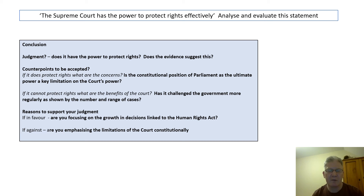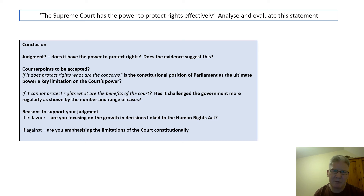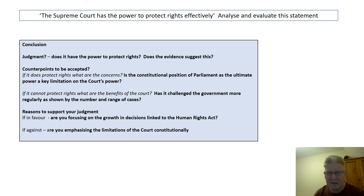In conclusion, your conclusion should have three parts. Start with a clear judgment: in the light of the evidence, does the Supreme Court have the power to protect rights? You've got to make your decision one way or the other. If you argue that it does, you want to accept certain arguments that go against you — for example, acknowledge that the constitutional position of Parliament is still ultimate and therefore is a key limitation. If you argue against and say the Supreme Court has limited power to protect individual rights, then acknowledge that the court has shown the capacity to challenge the government more regularly in recent times.